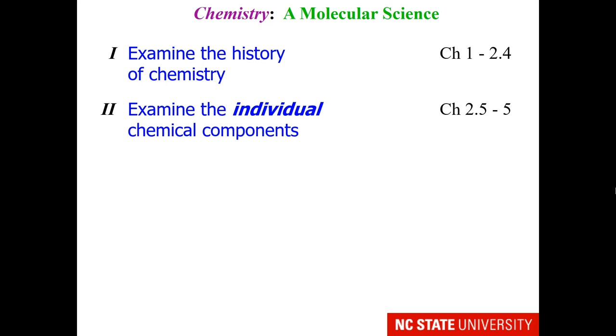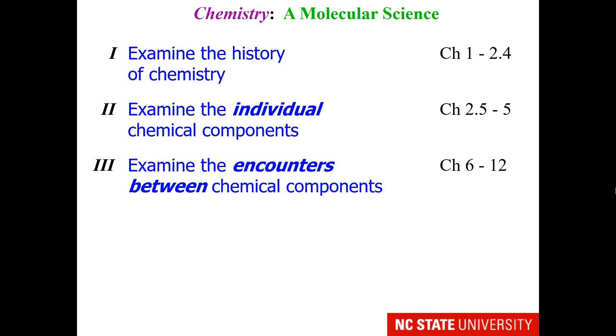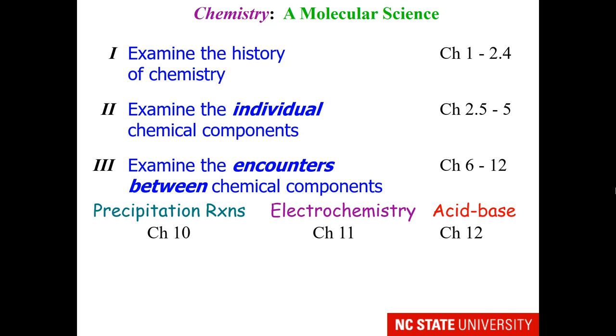Then we'll look at individual chemical components. By chapter 6, we'll look at encounters between different types of chemical components, and in particular cover precipitation reactions, electrochemistry, and acid-base reactions.